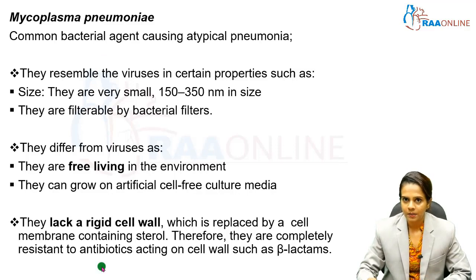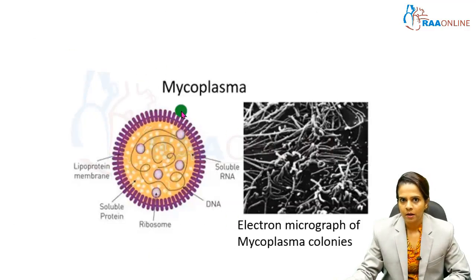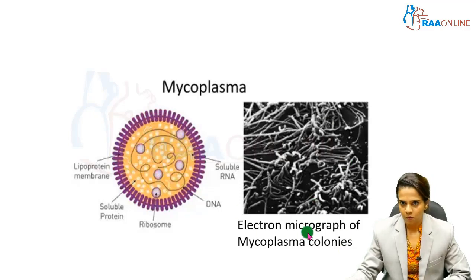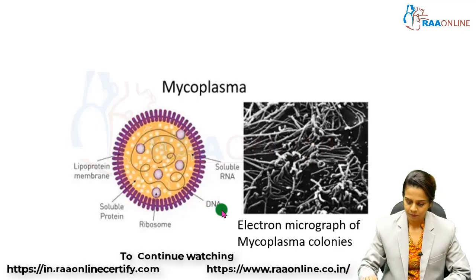In summary, mycoplasma resembles viruses in certain properties and differs from viruses in others. A schematic diagram shows the outer lipoprotein membrane, soluble proteins, soluble RNA, DNA, and ribosomes inside. An electron micrograph of mycoplasma colonies shows the filamentous forms and various pleomorphic morphologies of mycoplasma.